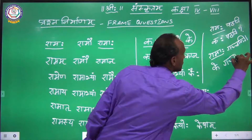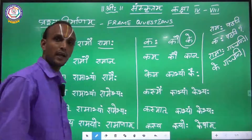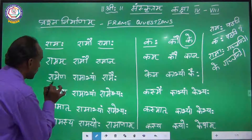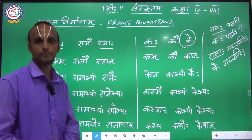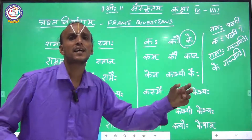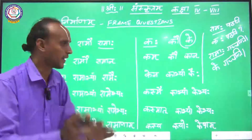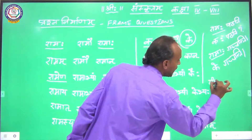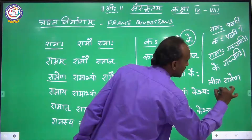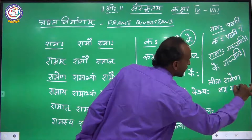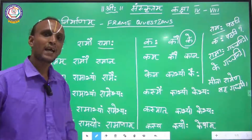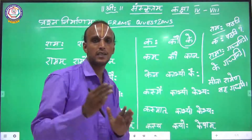Ke Gachanti. Now I am taking another example. I am taking this word Ramena: Sita Ramena Sahagachati. This is the sentence. Sita, Ramena, Sahagachati — what is the meaning of that sentence? Sita is going with Rama.